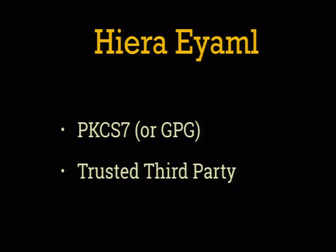eYAML is the closest analog in the Puppet world. The key difference is that Puppet does all of the decryption on the Puppet master, which means the Puppet master can see all of your secrets. It's a kind of secret silo — a trusted third party that has access to everything, relying on its own internal access controls to determine what secrets go where.